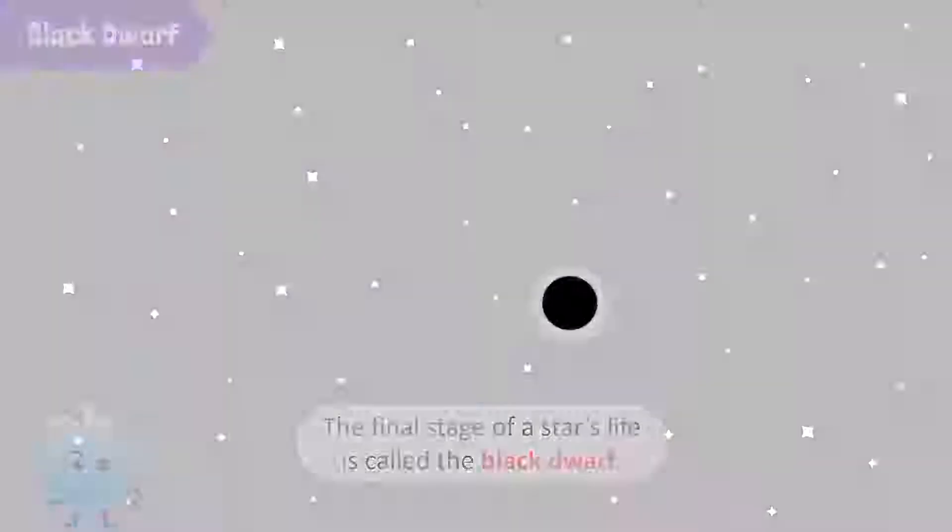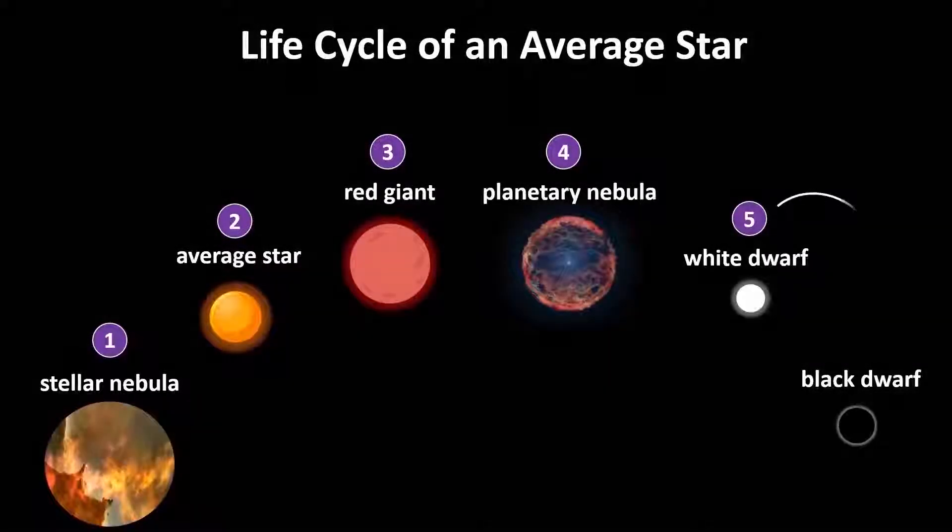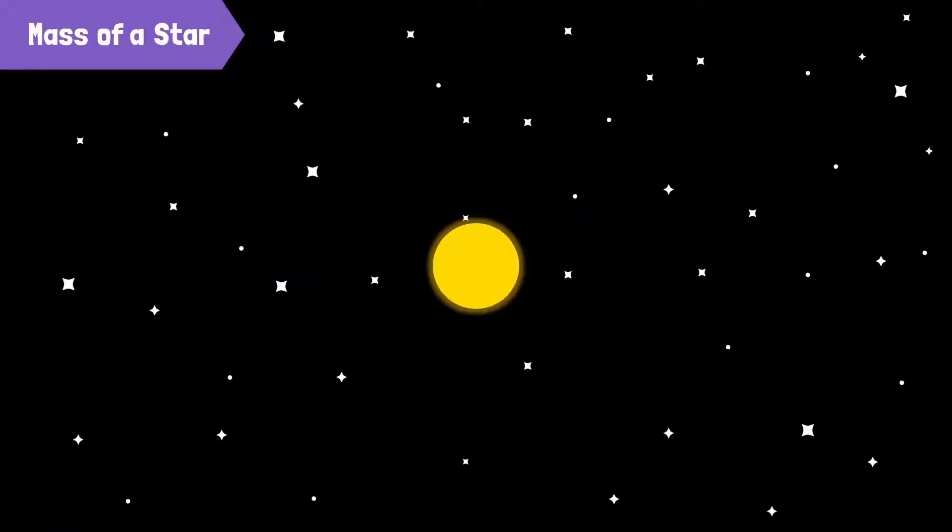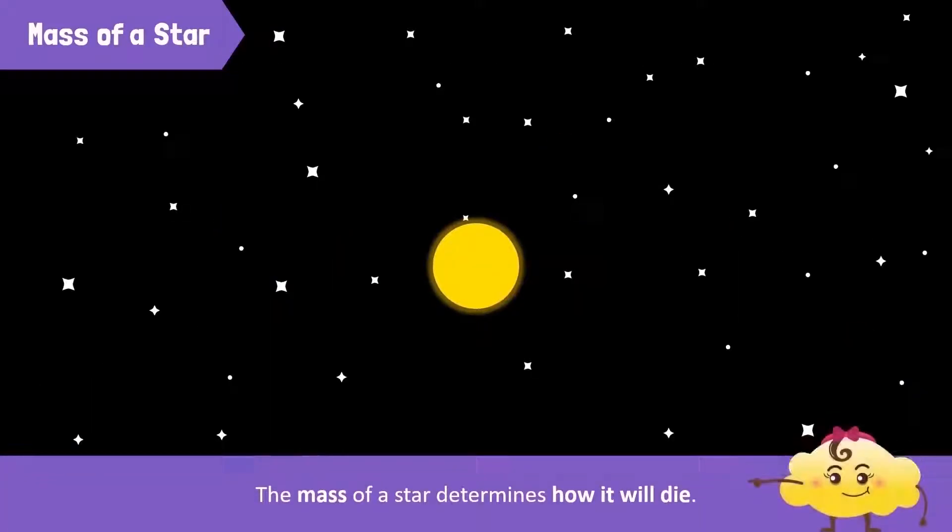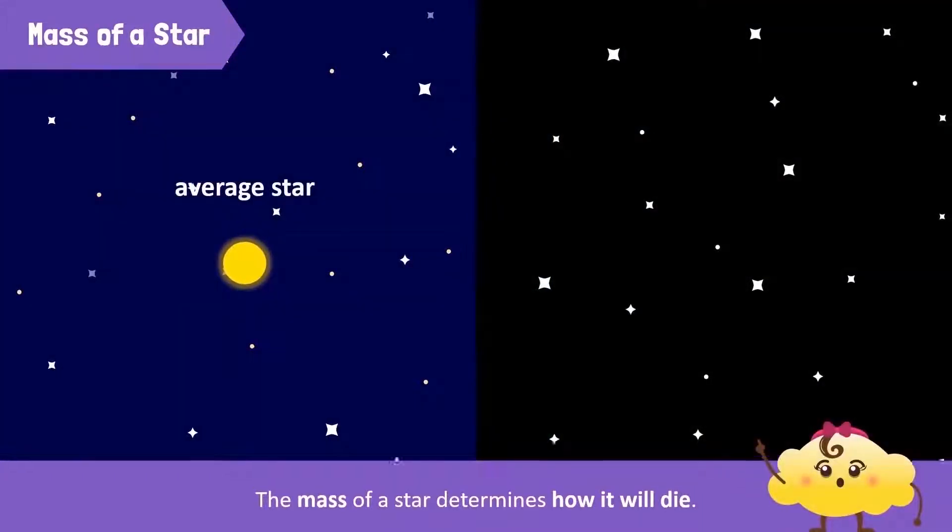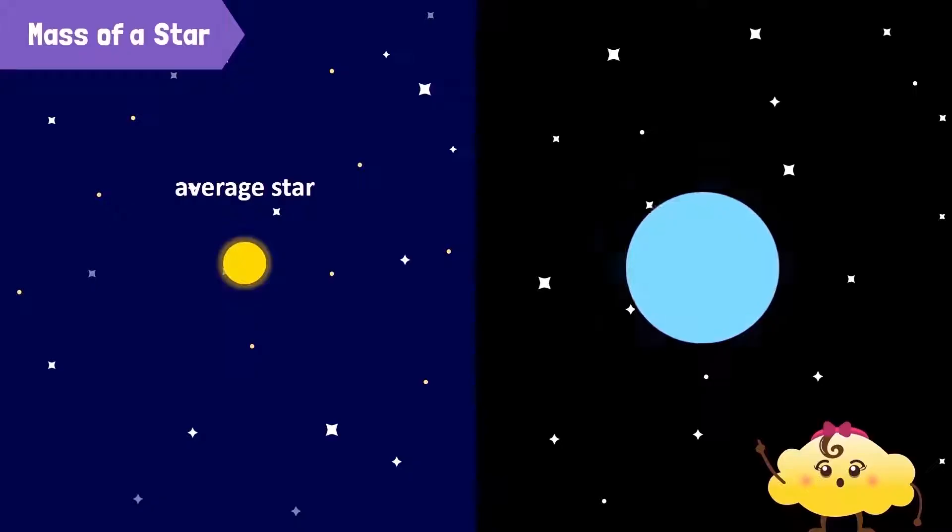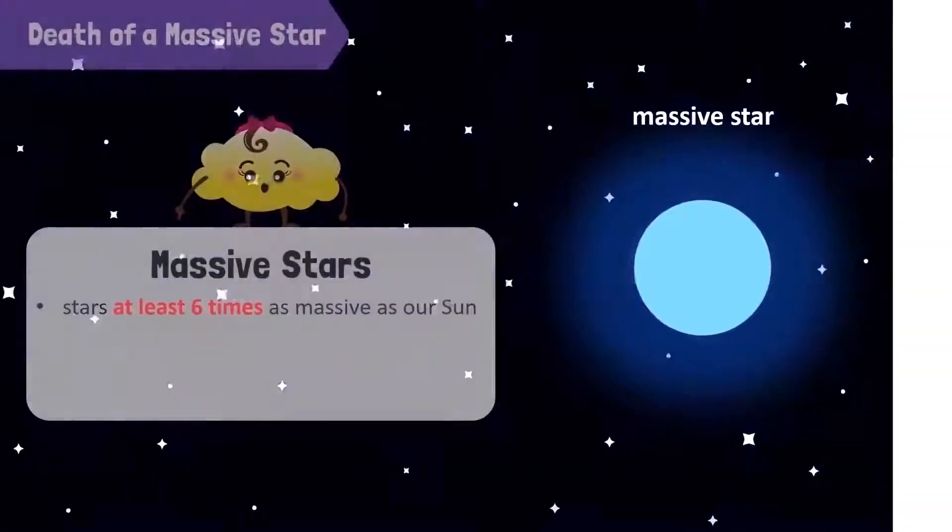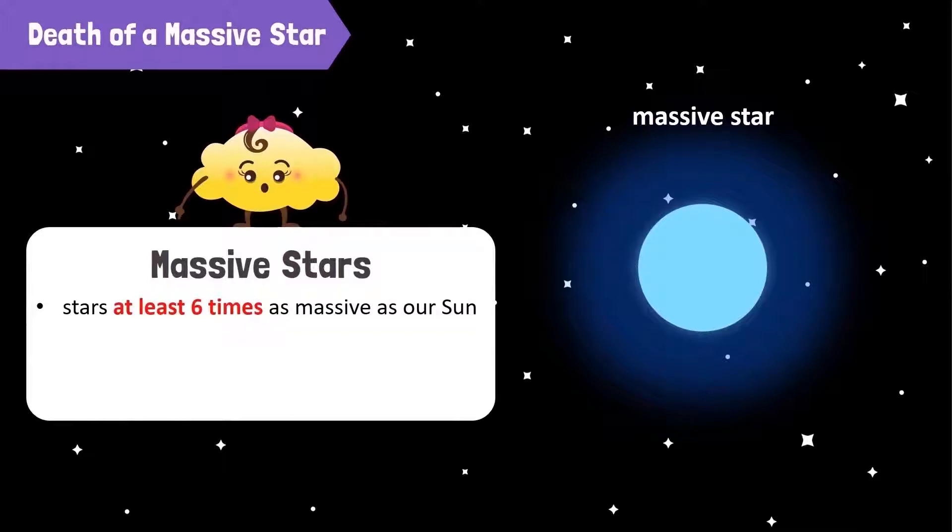Did you know that the mass of a star determines how it will die? Stars that are at least six times as massive as our sun are called massive stars. Massive stars die a more dramatic death than less massive stars. They also have a shorter lifespan.